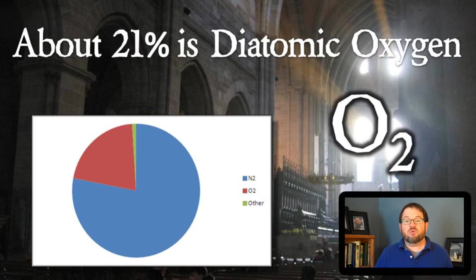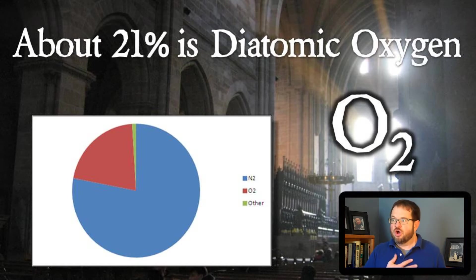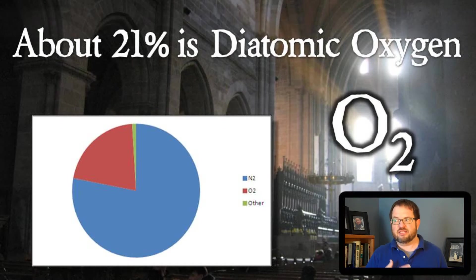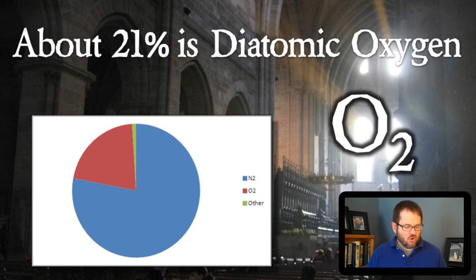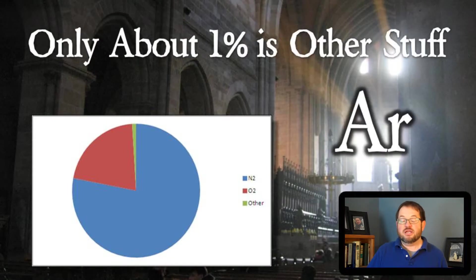Another 21% of the atmosphere is diatomic oxygen, O2 — the kind of thing that you and I need to live and that plants produce. Diatomic oxygen makes up about 21%, so only about 1% of the Earth's atmosphere isn't either nitrogen or oxygen.